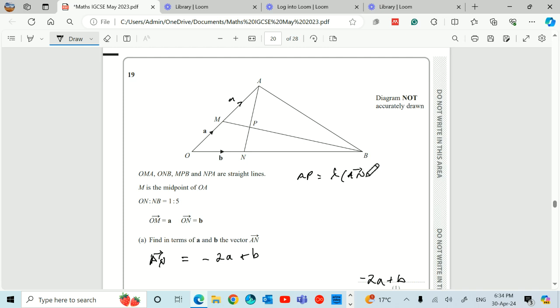Now we've just found AN. And of course that will be lambda multiplied by minus 2A plus B. And of course if I expand, that's going to give me minus 2 lambda A plus lambda B. And that will give me AP. Oops, I better write it as a vector. AP.